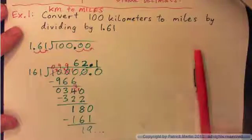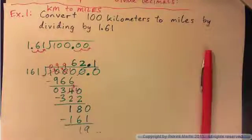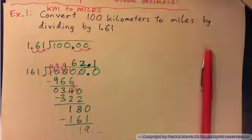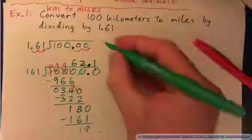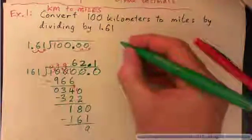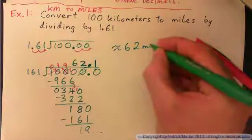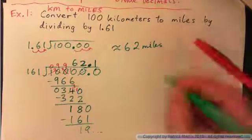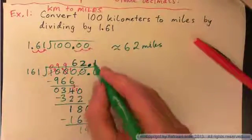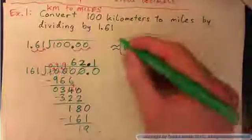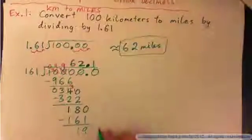So I'm going to say that is approximately 62 miles. If you round to the nearest whole number, you'll round down to 62.